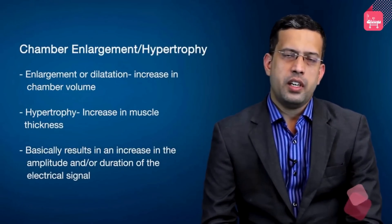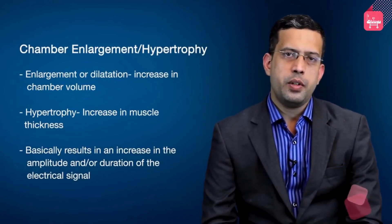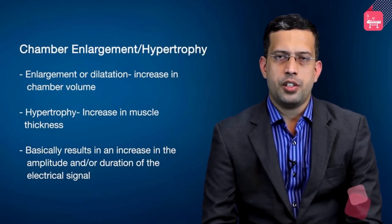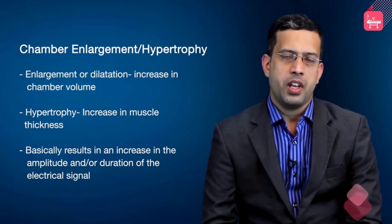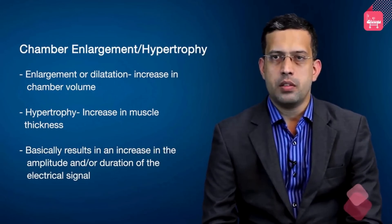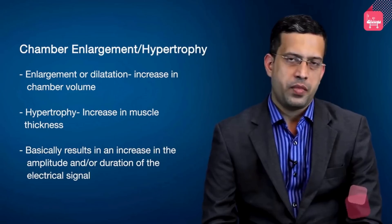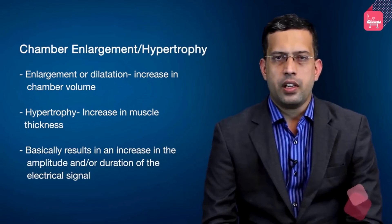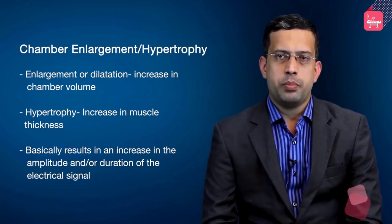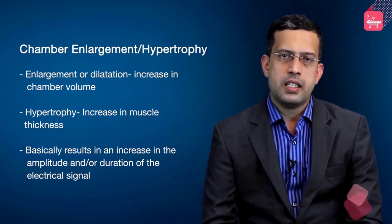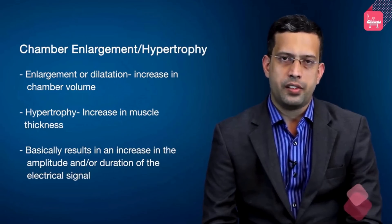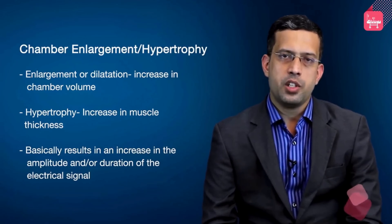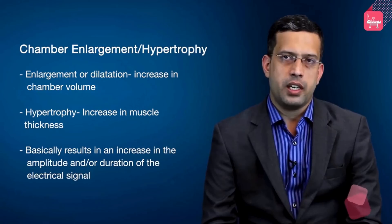At the pathological level, enlargement means dilatation or an increase in size or volume of the chamber, whereas hypertrophy means an increase in muscle mass. Either way, these conditions would basically result in an increase in the amplitude and/or duration of the electrical signal pertaining to that particular cardiac chamber.